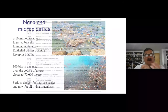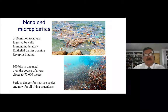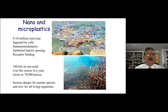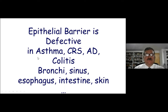Micro and nanoplastics were introduced to us as a big problem of the Pacific Ocean, but that's not the whole truth. We are being exposed to millions of tons per year — it is like a mountain in size. Every year we produce plastic and it degrades to microplastic, nanoplastic, and angstrom-size plastic. These particles are ingested by cells, are immunomodulatory, open the epithelial barrier, and bind to certain receptors. This is another huge problem.